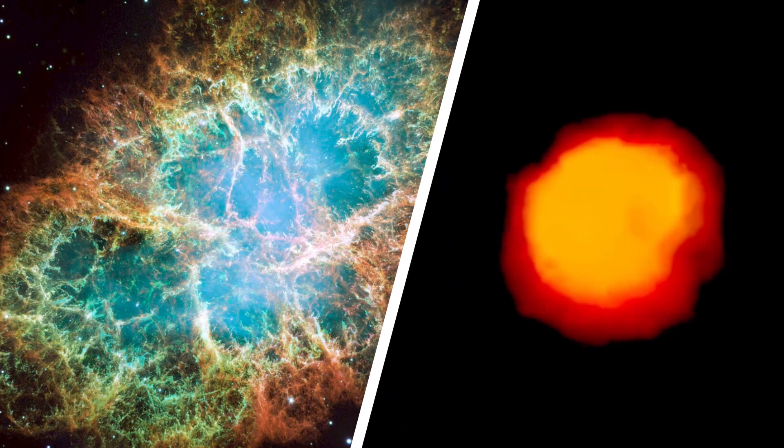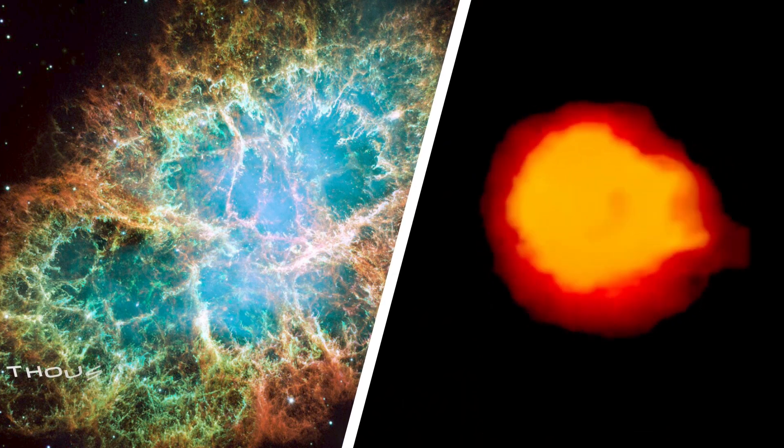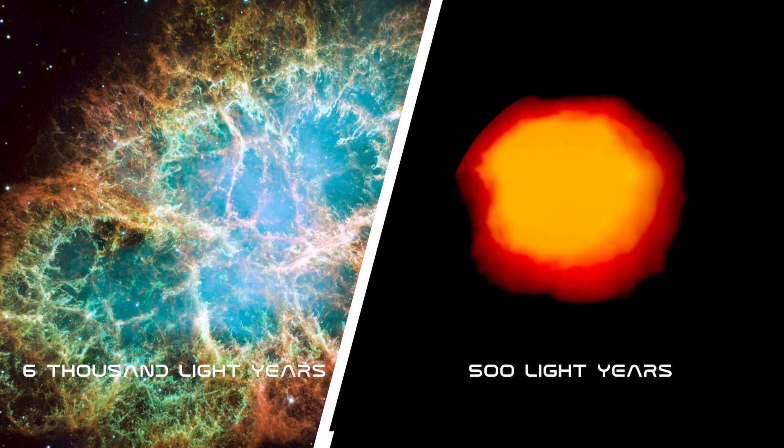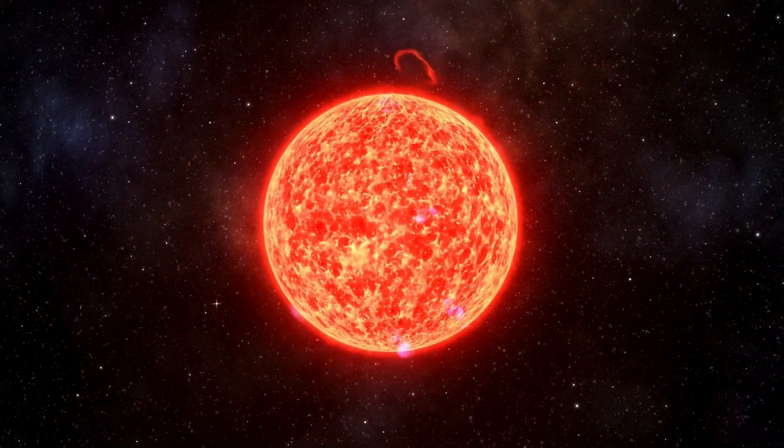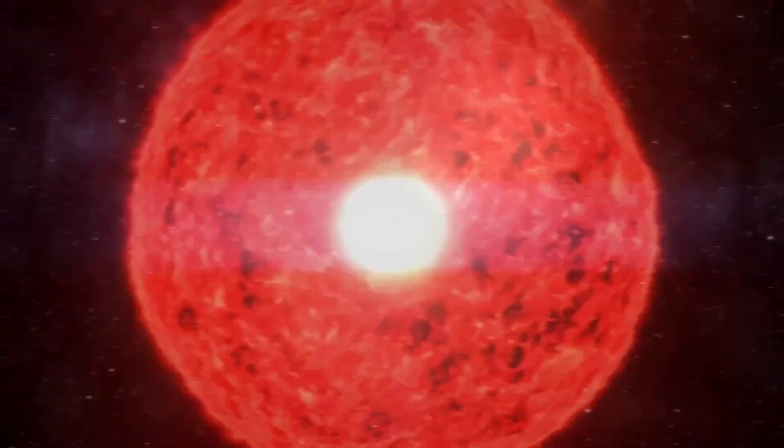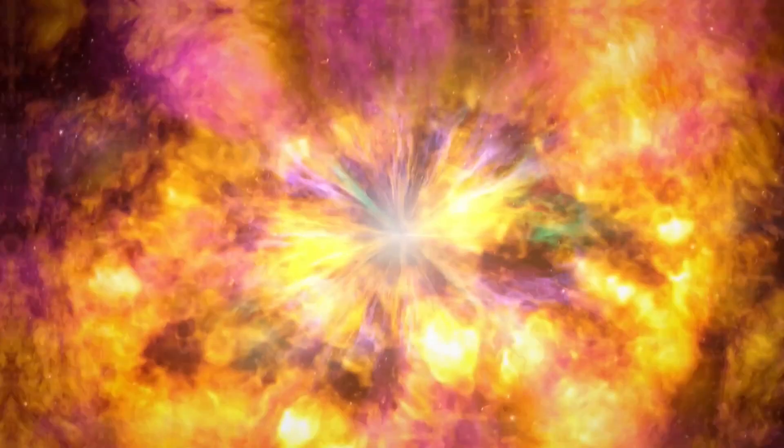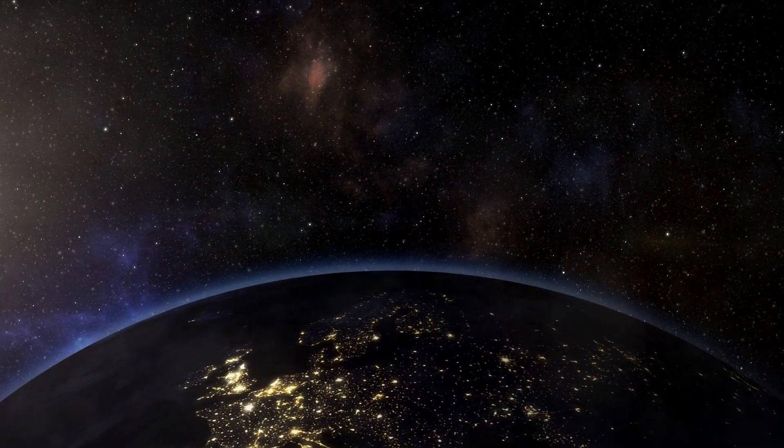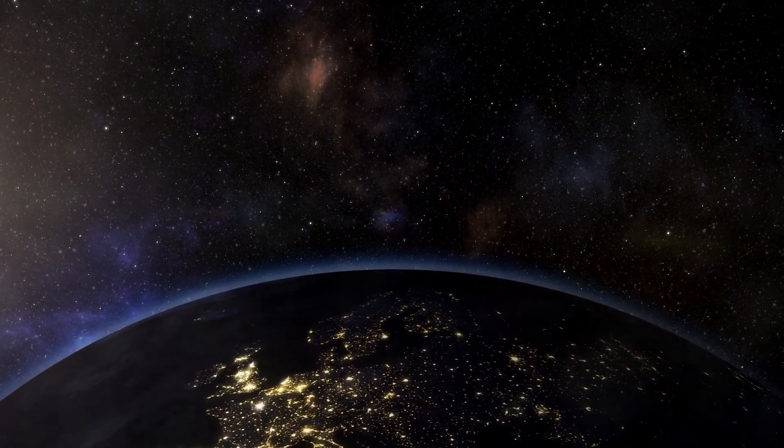But SN1054 is nothing compared to Betelgeuse, because that was 6000 light years away, but Betelgeuse is only 500 light years away. And that means when this goes through a supernova, it's going to be much more brighter in our night sky. We have to be expecting it to happen soon, and it will change our sky for a little bit.